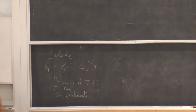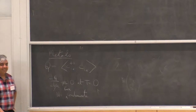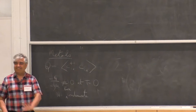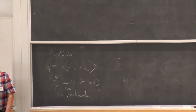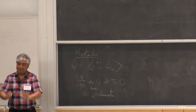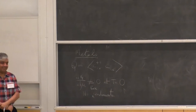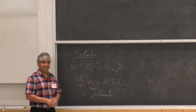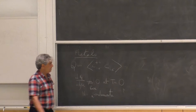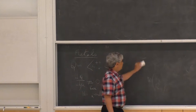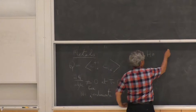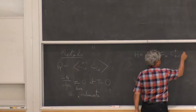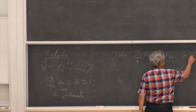If I give you these constraints, the one state that you know very well is free electrons. If you take free electrons with a Hamiltonian ε_k c†_{k,σ} c_{k,σ} and add a chemical potential term, this satisfies all these properties. The way it satisfies these properties is by having a very special property called a Fermi surface. In momentum space, there's a boundary called the Fermi surface — states inside are occupied in the ground state and states outside are empty — at k_F.